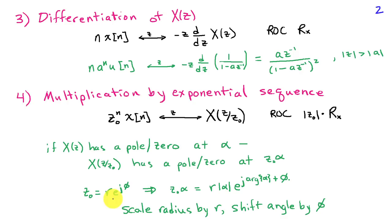We can expand Z-naught in polar form as magnitude R and phase e^(jφ). This implies that when I do this multiplication, my new pole has magnitude R times the magnitude of the original pole. So if R is greater than 1, I move the pole further from the origin. If R is less than 1, I shrink the pole toward the origin. The phase of alpha gets shifted by φ, so I also rotate the pole by angle φ.